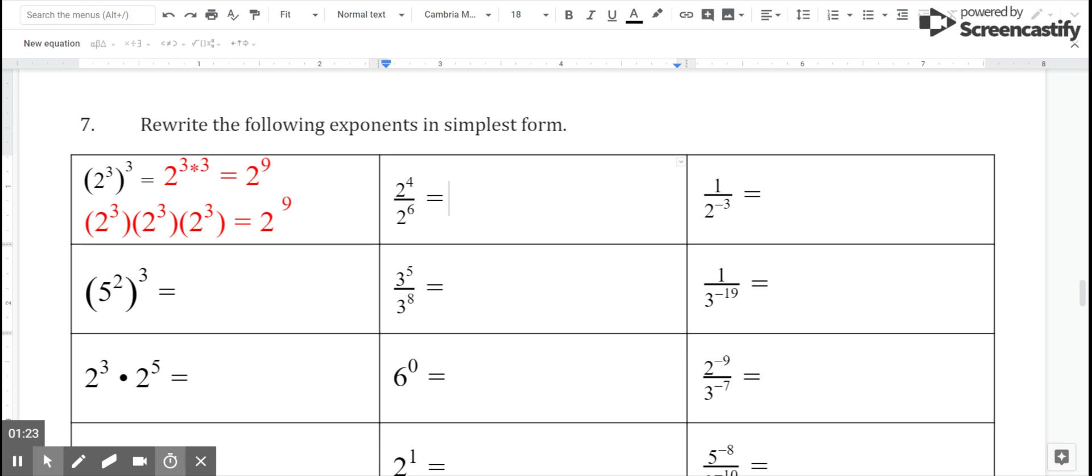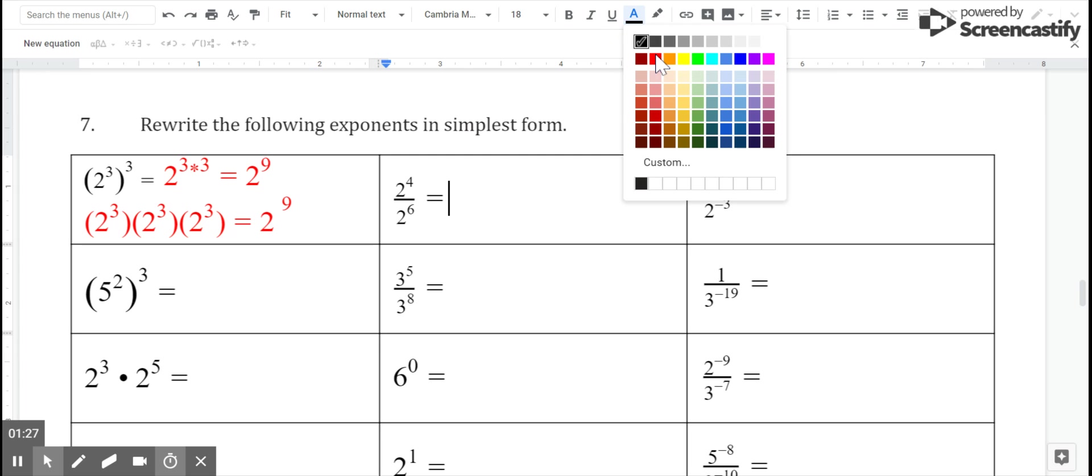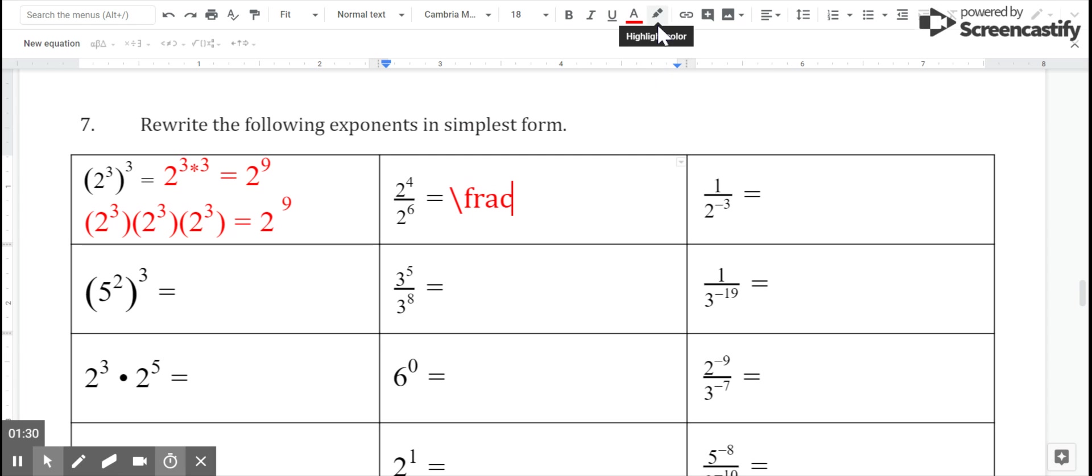Take a look at the middle problem. Two to the fourth over two to the sixth. So in order to approach this, you could think of this a couple ways. I would think of this by multiplying out the numerator and the denominator.